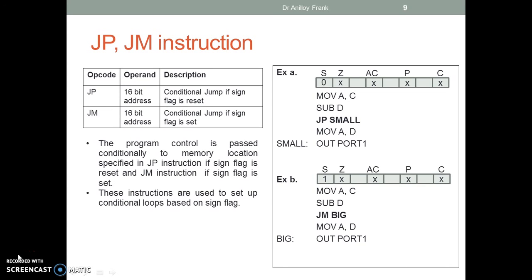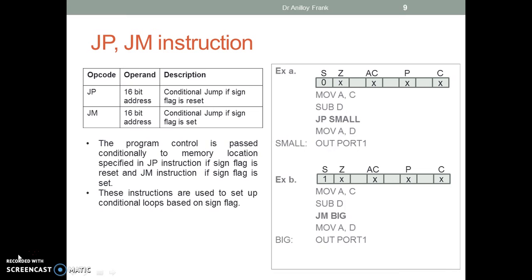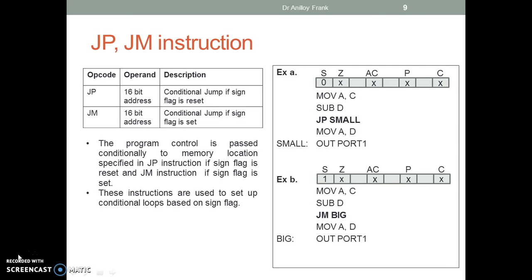The program control is passed conditionally to the memory location specified in the JP instruction if the sign flag is reset, and the JM instruction if the sign flag is set. These instructions are used to set up conditional loops based on the sign flag. Example A: JP jumps to label 'small' if the sign flag is reset. Example B: JM jumps to label 'big' if the sign flag is set.